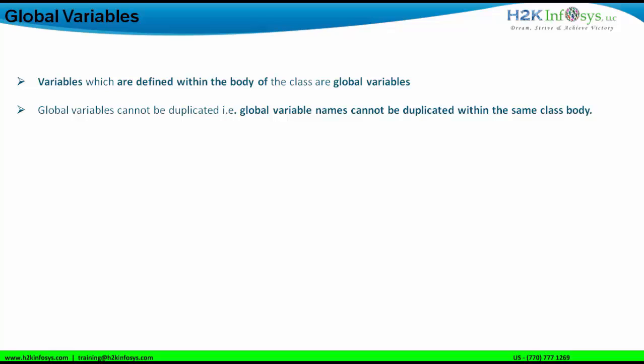Global variable names cannot be duplicated within the same class body. The difference between a local variable and a global variable is that if a class file has more than one method and has a global variable, that global variable can be used in all the methods present in that class file. Whereas a local variable can only be used in the method body where it is defined or declared.